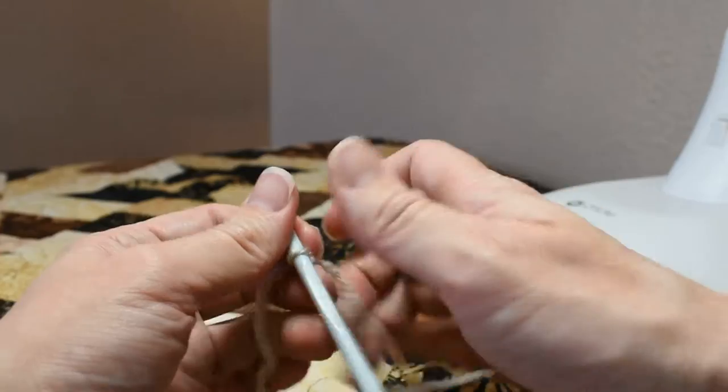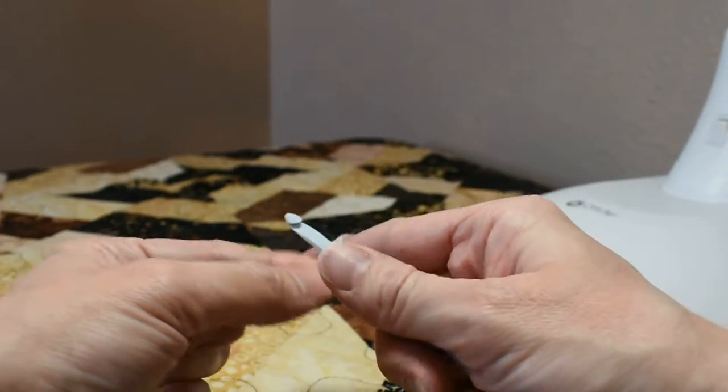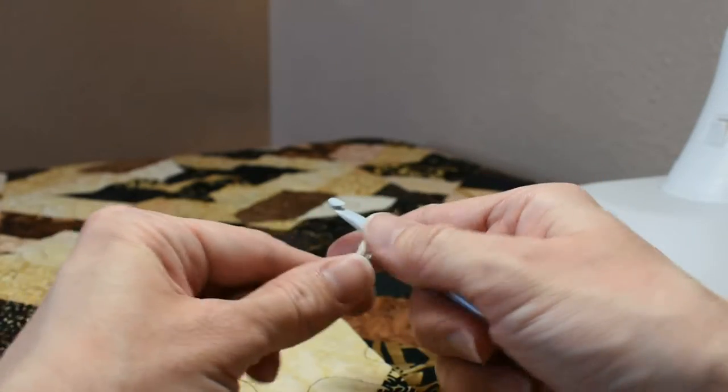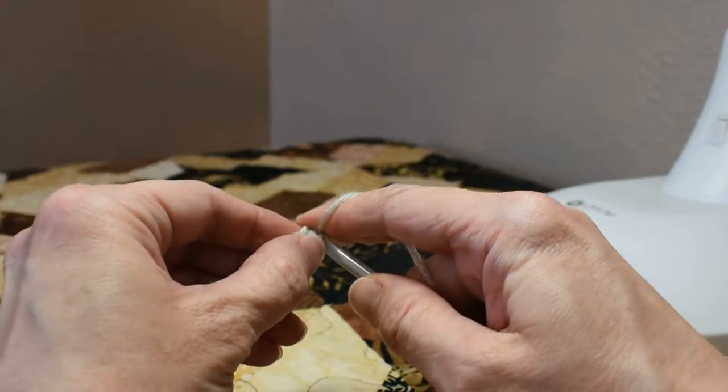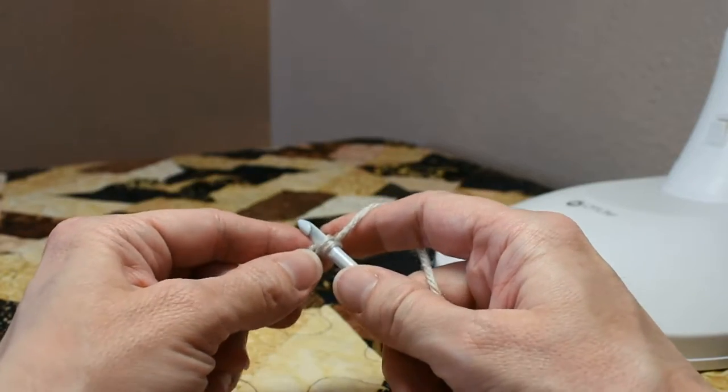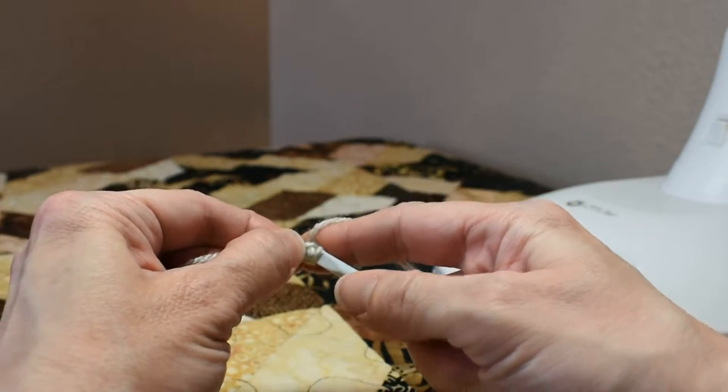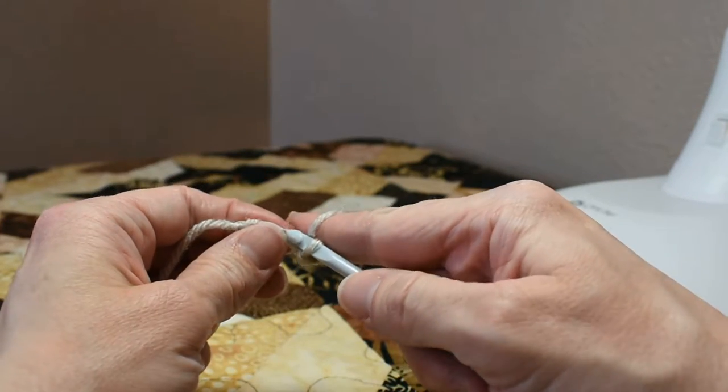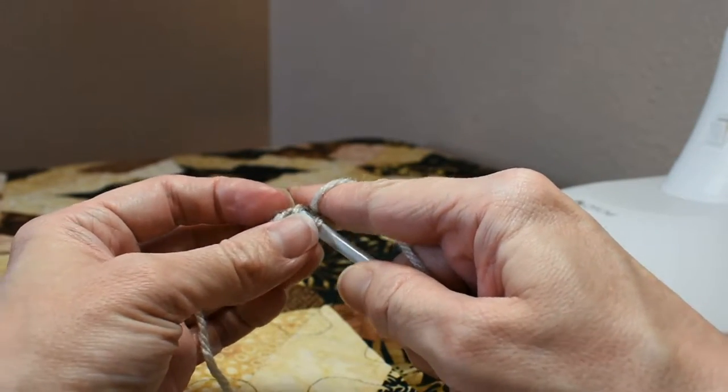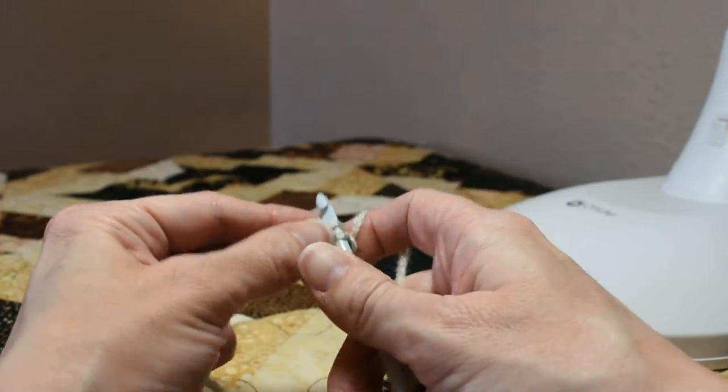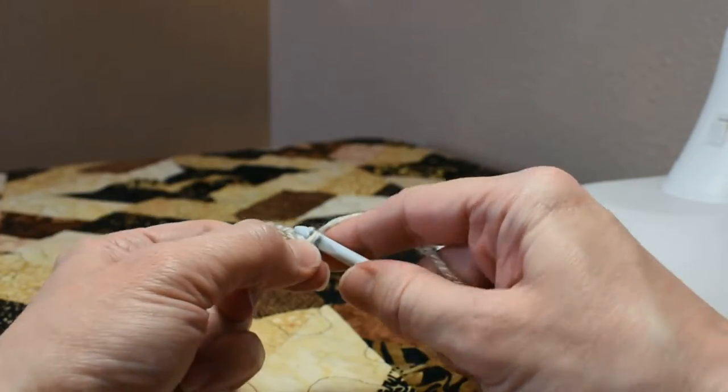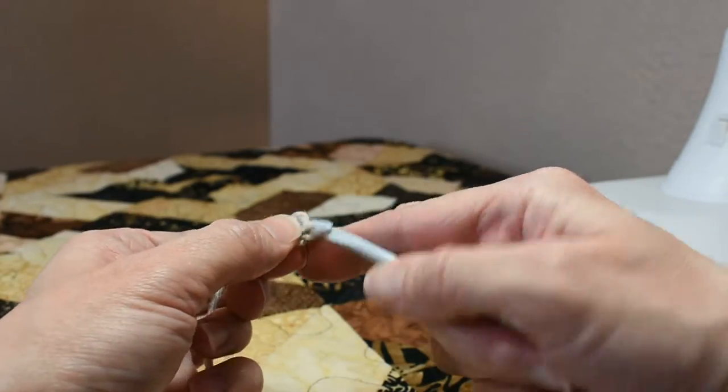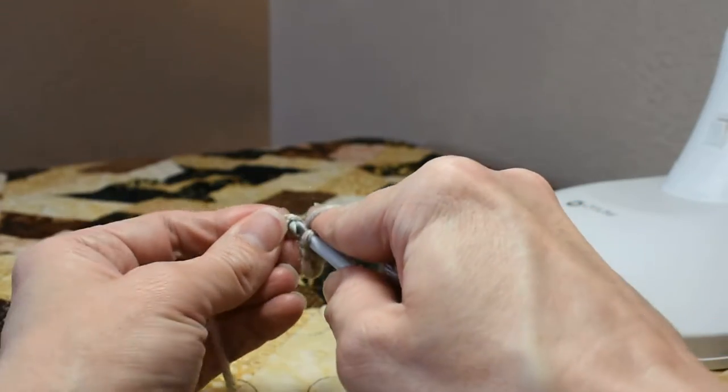So we begin by chaining four. Turn your chain and working in the back bumps of your chain starting with the closest chain to your hook, slip stitch in the first three. Now this is a little bit tight but it's necessary for the look that we want. So just wiggle as needed to get through your stitches.